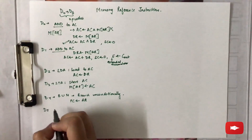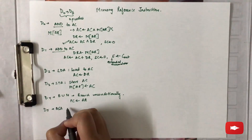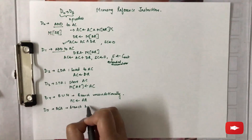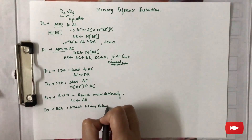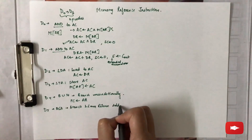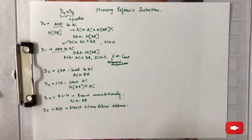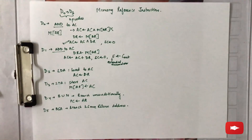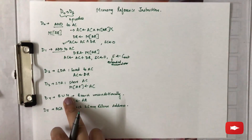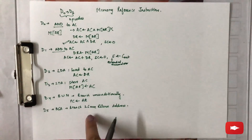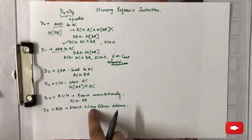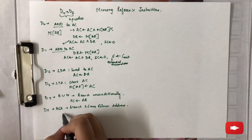d5 is BSA, which stands for Branch and Save Return Address. The purpose of BSA is branching to a portion of a program called a subroutine or procedure. Unlike BUN where the entire next instruction is executed, in BSA you branch to a portion of a program and then return back to the ongoing instruction.